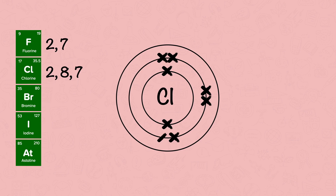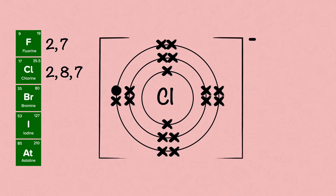An atom is considered to be stable when it has a full outer shell. If an atom does not have a full outer shell, it will either lose or gain electrons. It is easier for Group 7 elements to gain one outer electron to become stable than to lose all seven. Gaining one electron requires less energy.